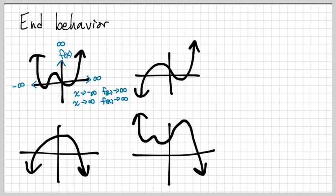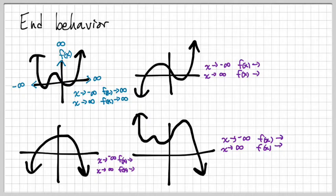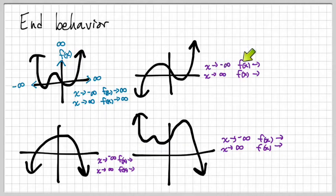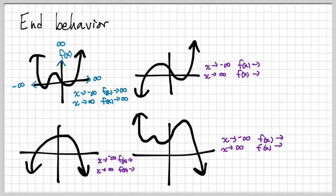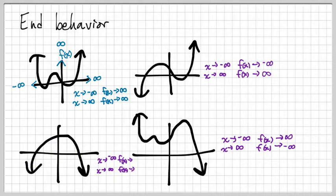I want you guys to write the end behavior for each of these. For every graph, there's a left and a right-hand side, so you should always have 'x approaches negative infinity' and 'x approaches positive infinity' for every single one. What changes is what the y's — what the f(x)'s — are doing. On the left side of this graph we're going towards negative infinity; on the right side, positive infinity. For the bottom one, the left side goes to positive infinity and the right side goes to negative infinity. And for the last one, left side is down and right side is down — so negative infinity, negative infinity for both.